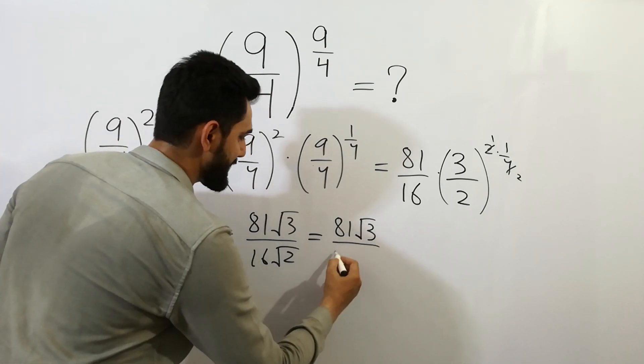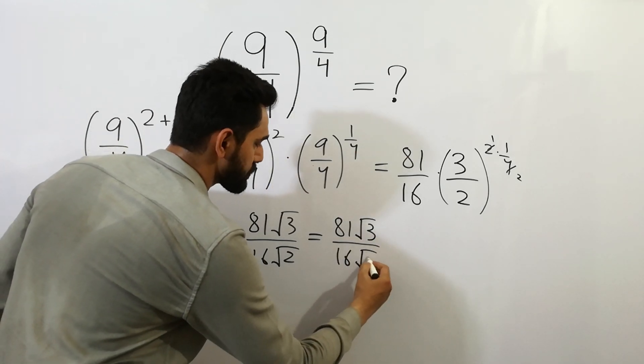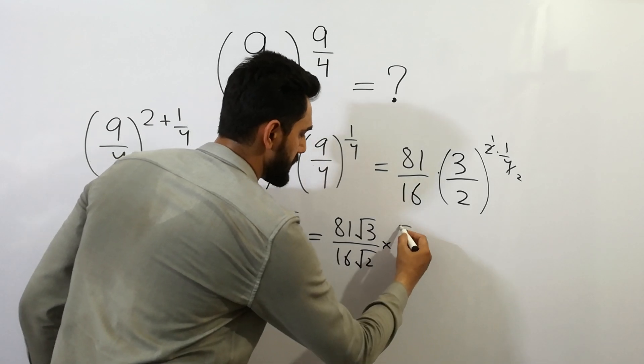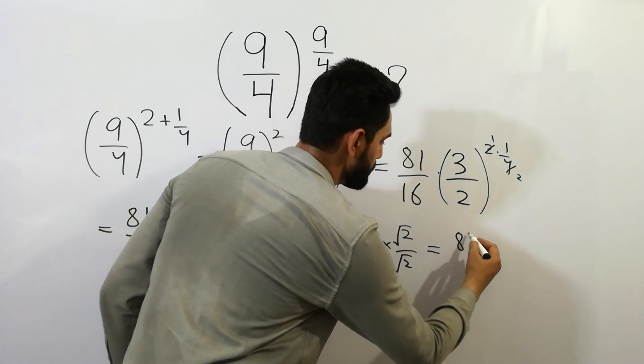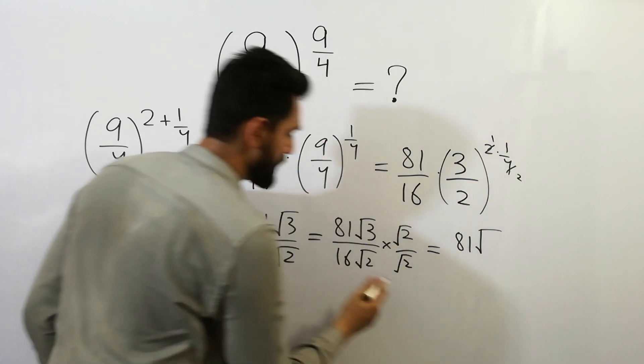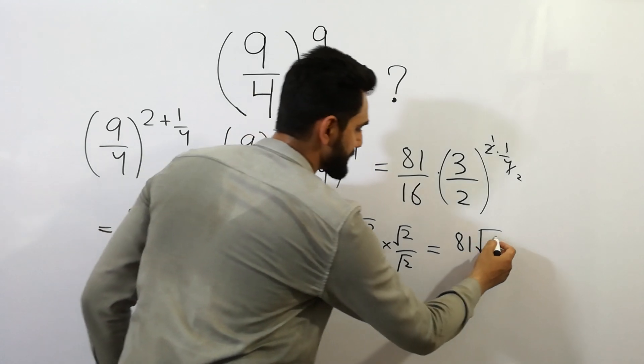81, square root of 3, divided by 16, square root of 2, divided by square root of 2. If we solve it, we get 81, square root of 3 times 2, we get 6,